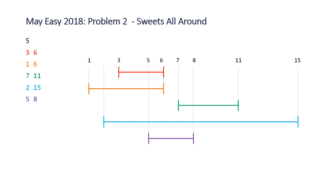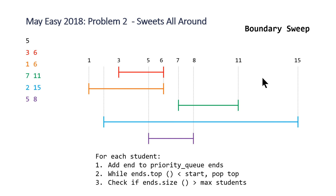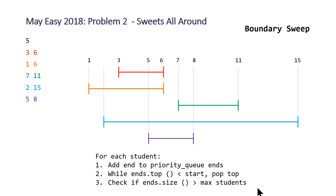The algorithm we're going to use is something I'll call a boundary sweep, and there are three steps for each student. First, we add the end of the range to a priority queue called 'ends' — this is a min-heap, so we negate each number on insertion. Second, we continuously pop the top value while it is less than the start of the current student's range. Third, we check if the size of our priority queue 'ends' is greater than the current maximum students satisfied, and if so, we reset our values.